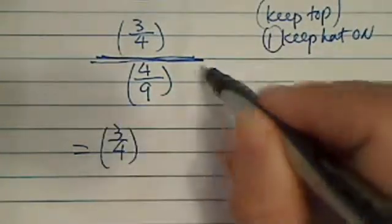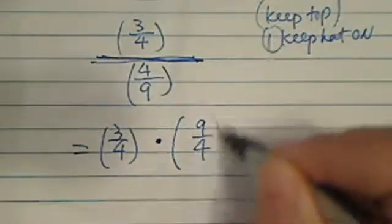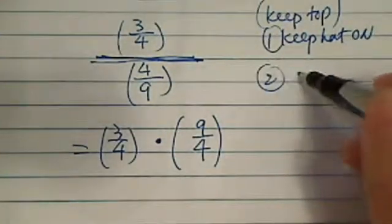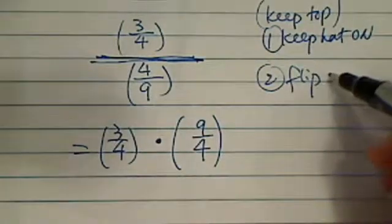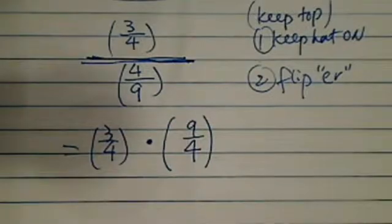And then you multiply, change this division into multiply, and you flip the bottom, or what we call it a reciprocal. So flip, one of my students says, maybe it's a flipper. So you keep the hat on, wear a flipper.